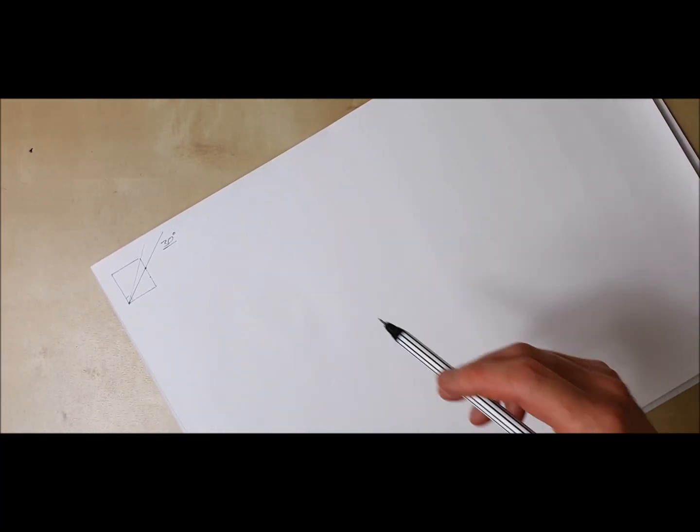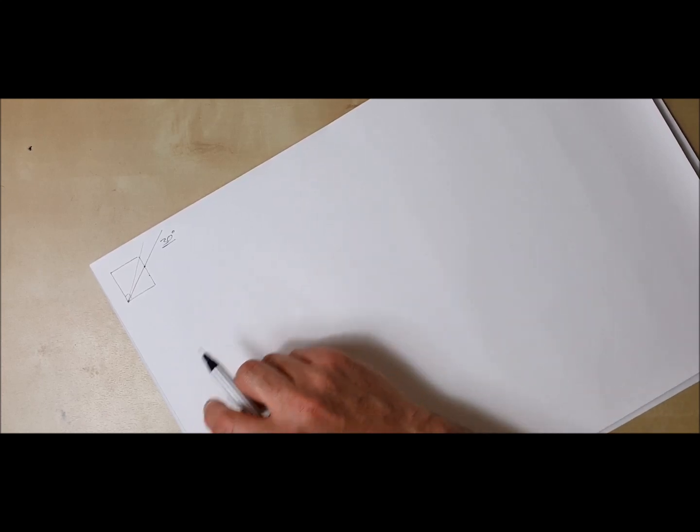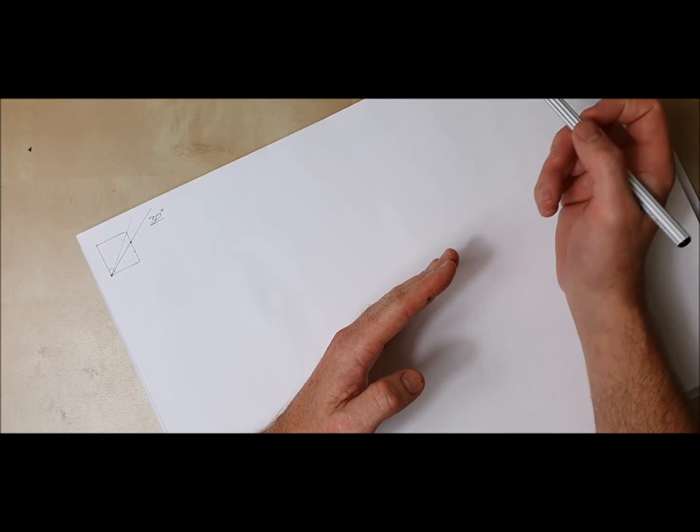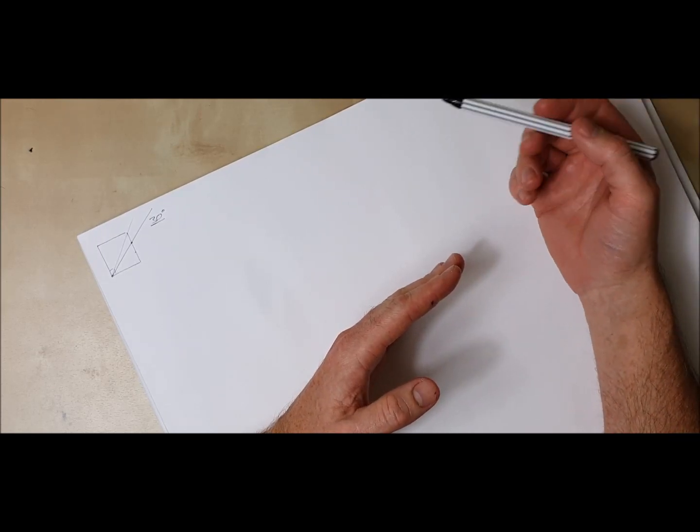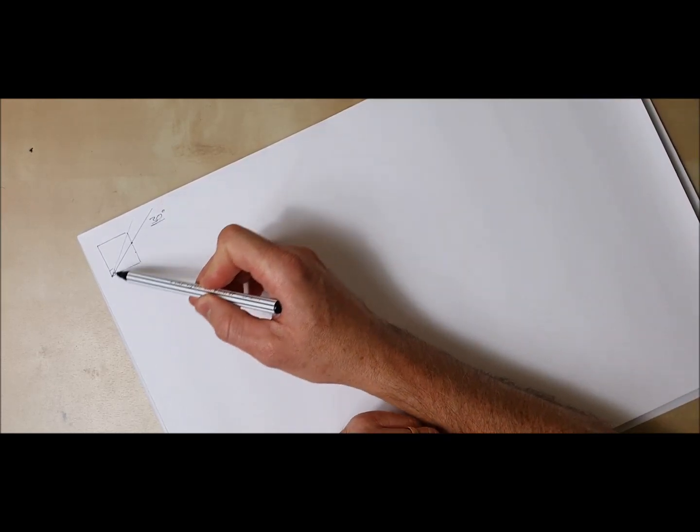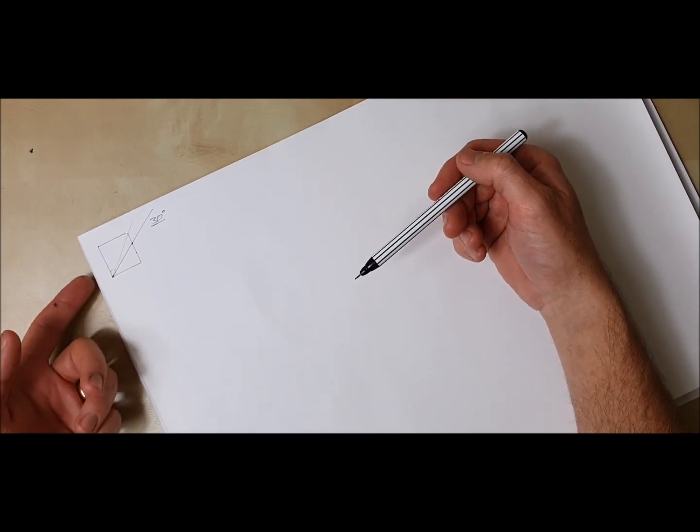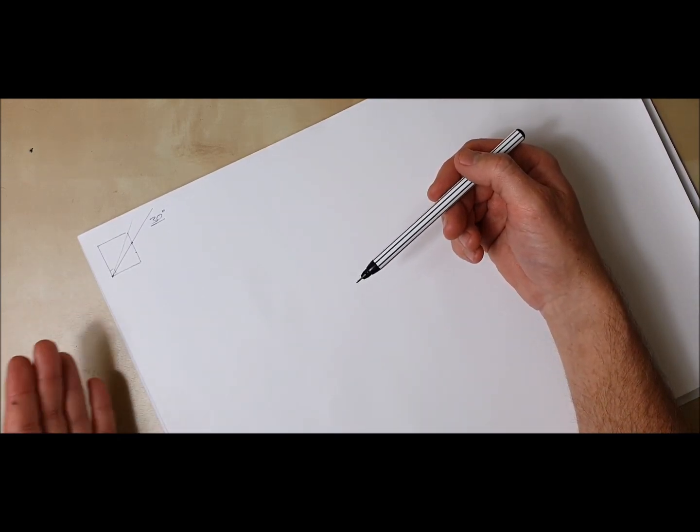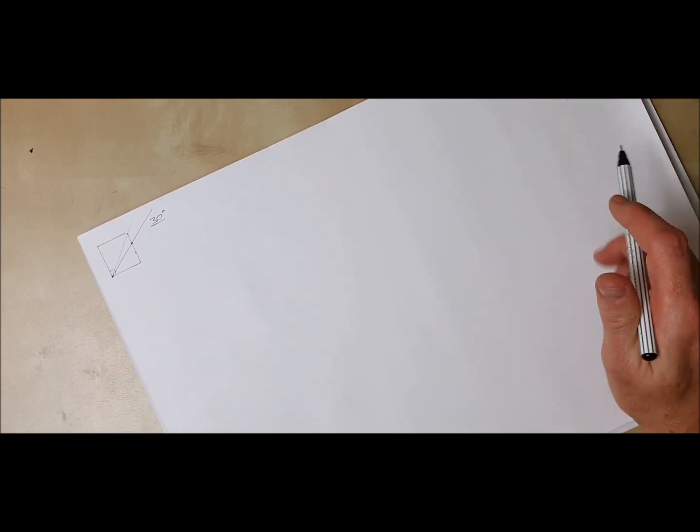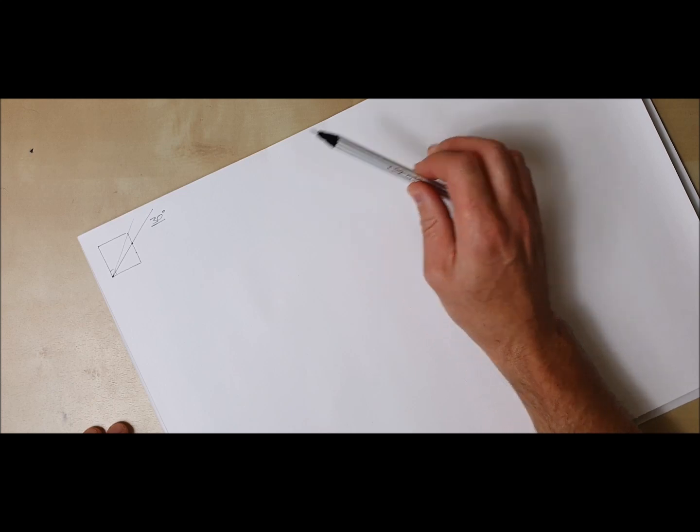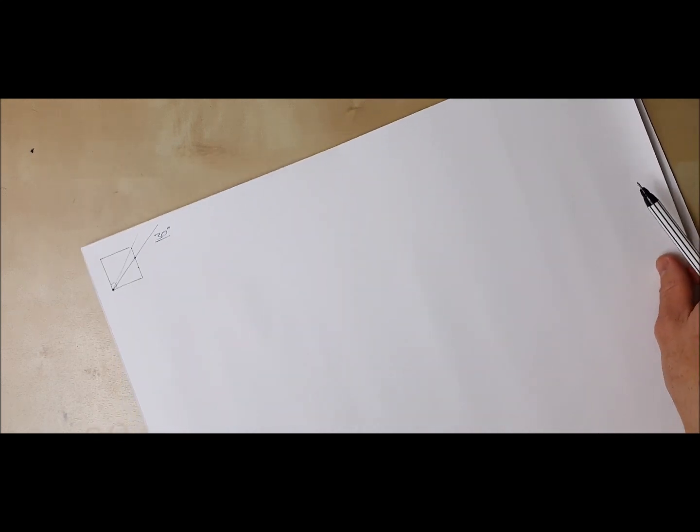Imagine now that every line we draw that's one of the three main angles forming our cube will follow this line here. The other lines that drop down, we'll look at the edge of the page to make sure we stay parallel. Then there's a trick I'm going to show you for the lines that run in that direction.